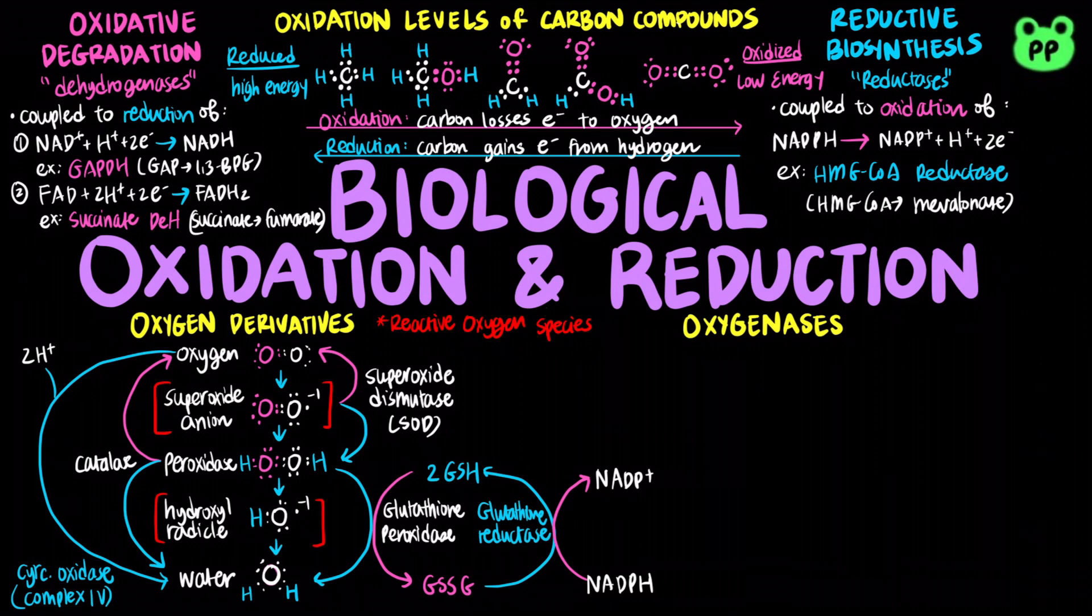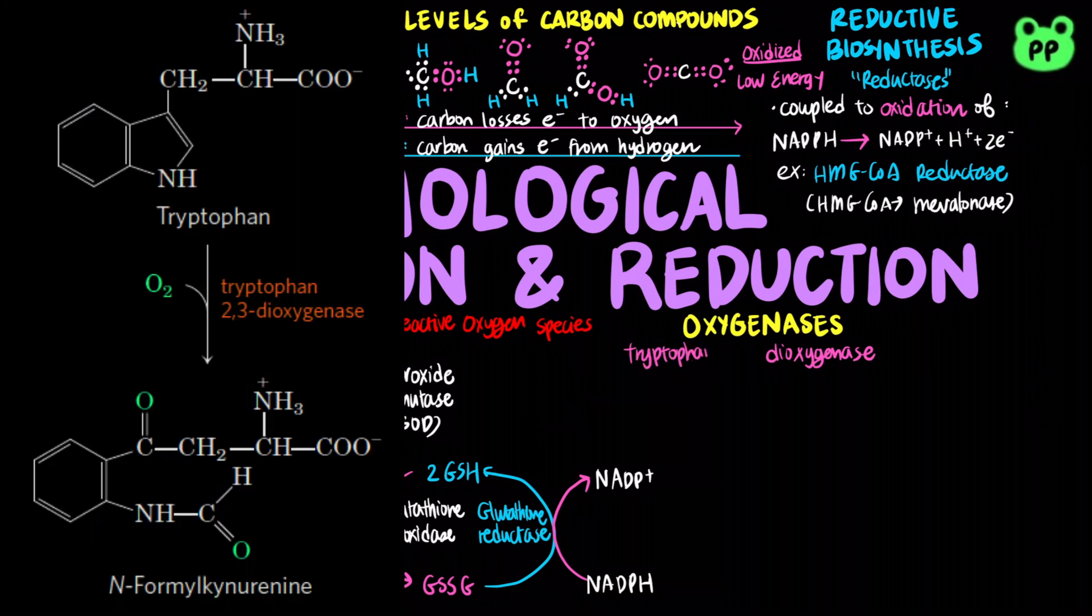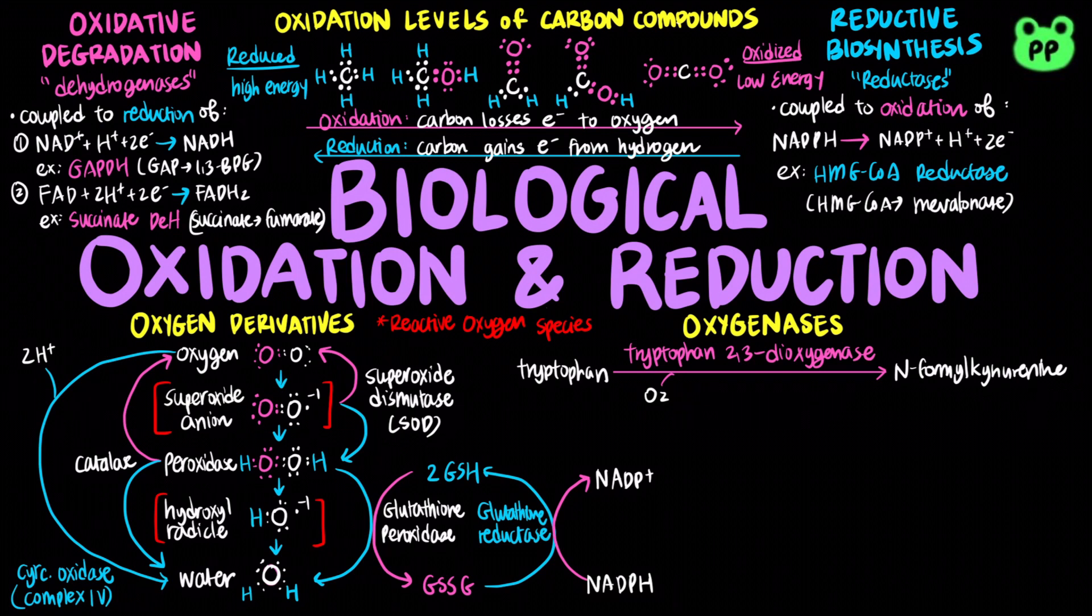Dioxygenases catalyze reactions in which both oxygen atoms are incorporated into the organic product. An example would be tryptophan 2,3-dioxygenase, which catalyzes the opening of the 5-member ring of tryptophan in the catabolism of this amino acid.